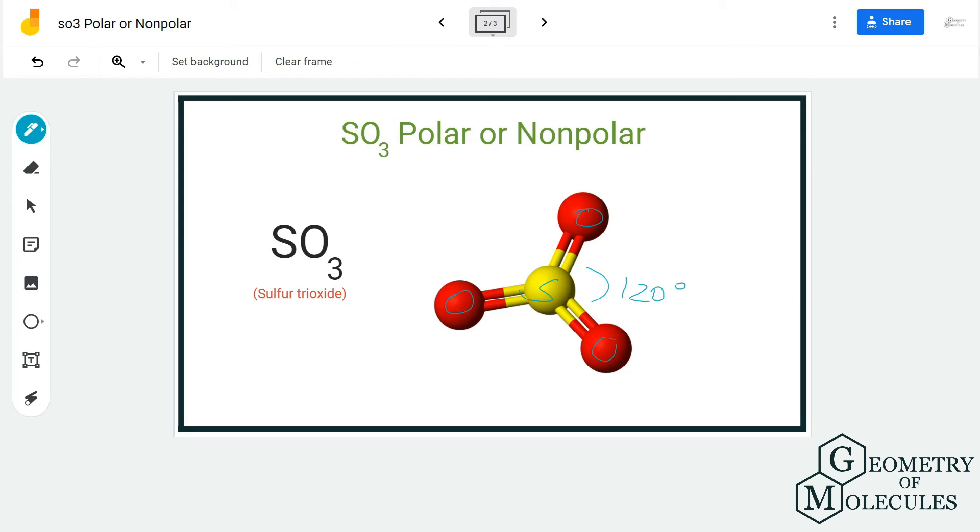You can also check the electrostatic potential of this molecule to know if there are any charges. But because of this simple arrangement of the atoms in this structure, there is no net dipole moment in this molecule. As a result, there are no poles formed in this molecule, and hence SO3 is a nonpolar molecule.